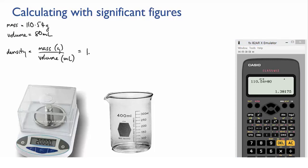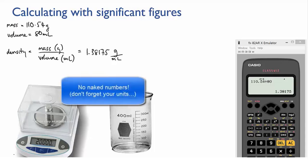And the calculator tells us that we have 1.38175, and we're going to put the units in as grams per mil, because the units of our mass was grams and the units of our volume was mils, and we don't like naked numbers.